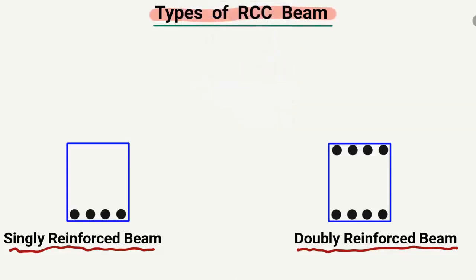I will explain the difference with the help of an example. In a singly reinforced beam, looking at the cross-section of the beam, the main reinforcement is provided only in the tension zone. Tension reinforcement is provided only in the tension zone for taking the tensile stresses.